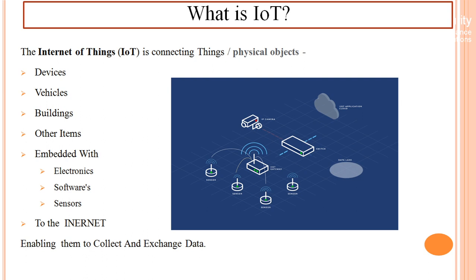Physical objects — whatever you see in your home or office — can be connected. For example, even your chairs, walls, and doors can be connected. You can connect anything, whether it runs on electrical supply or is a mechanical object like a building or vehicle. Everything can be connected via embedded components.